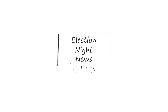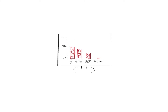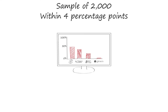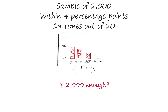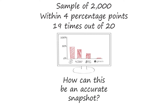Let's look at an example. At election time, media conduct polls on how people plan to vote. Often they will add a footnote on the sample size and accuracy of the poll — for example, based on a sample of 2,000 and accurate within 4 percentage points, 19 times out of 20. Have you ever wondered if calling 2,000 people is really enough to get a sense of how millions of people will vote on election day? How can this be an accurate snapshot?